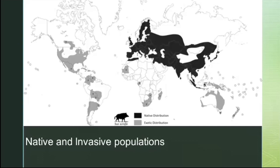The wild boar has the largest geographic range of any large mammal. It can be found on every continent except Antarctica. This map shows in black the areas where it's a native species, and in grey it shows where it's an invasive species, introduced by humans.